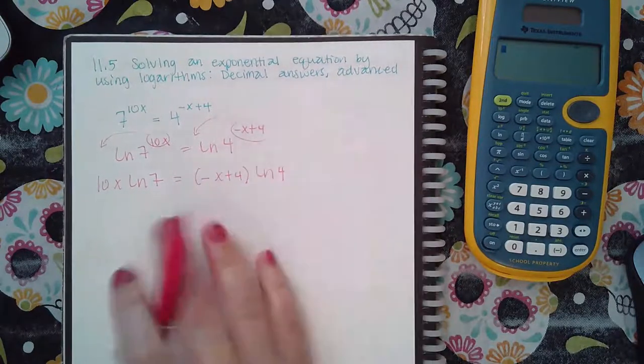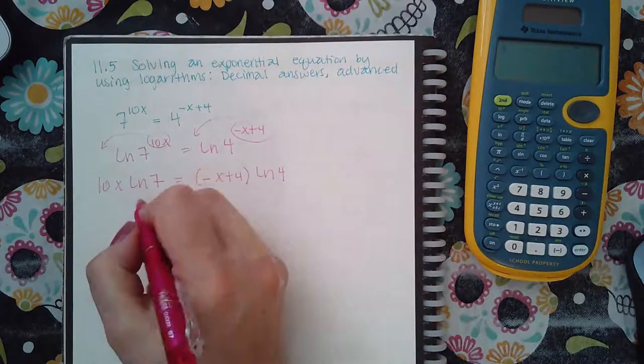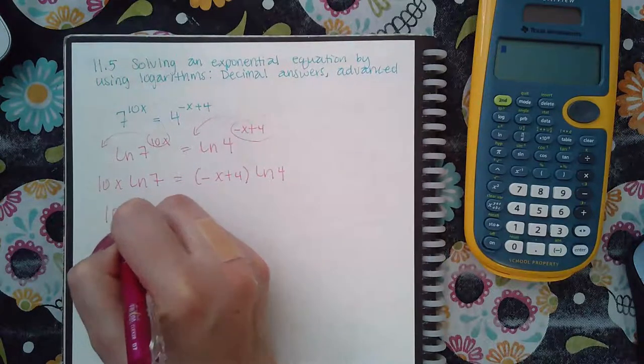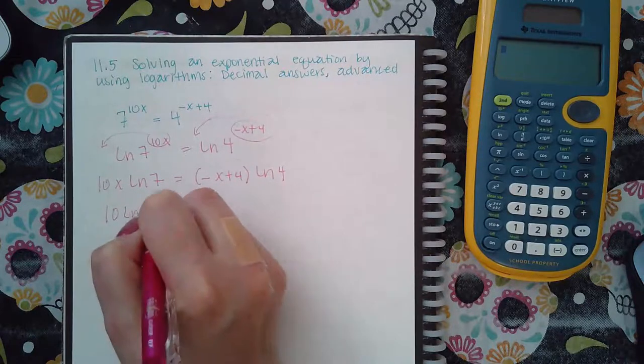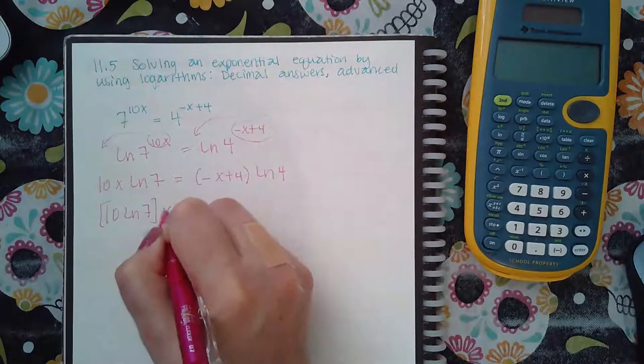Remember, ln(7) and ln(4) are just numbers. If you wanted to write this as a coefficient, it would be 10 ln(7). That whole thing is a coefficient times x.